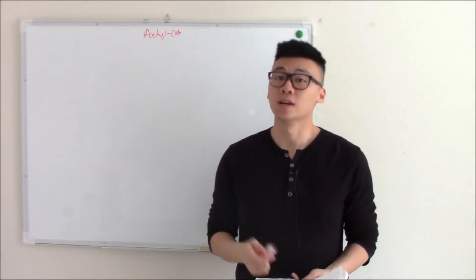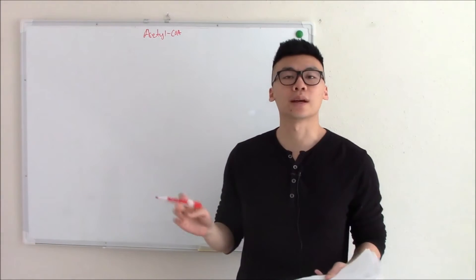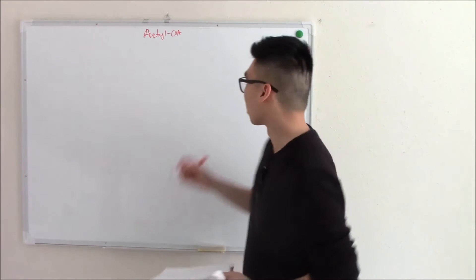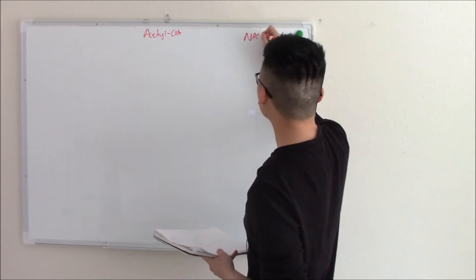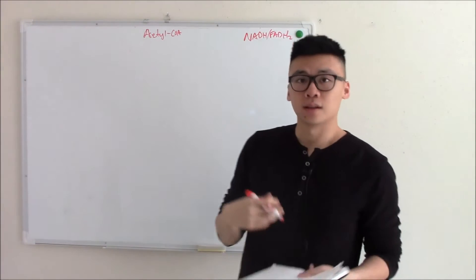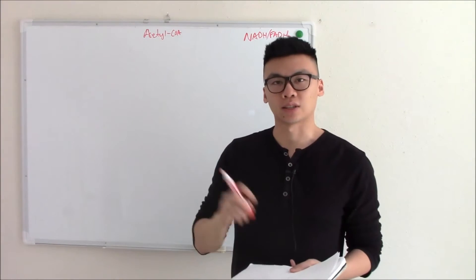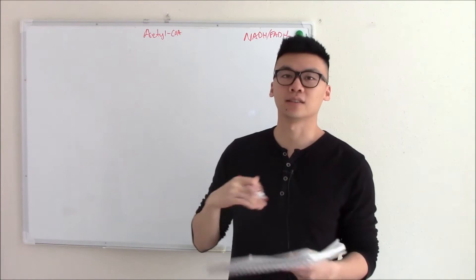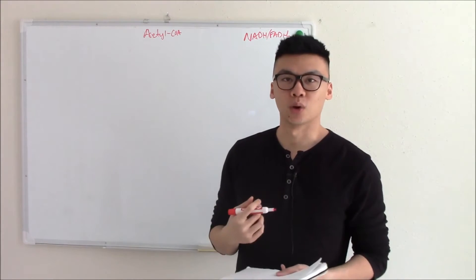Moving on to the TCA cycle, and remember the TCA cycle is all about making dehydrogenases. We're going to be making NADH and FADH2. That's just to make sure when we get to the electron transport chain we have a ton of dehydrogenases to do what we need to do.